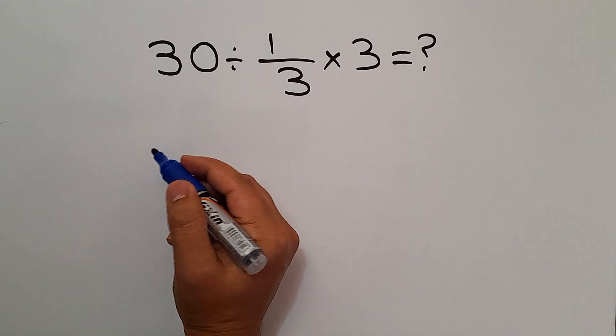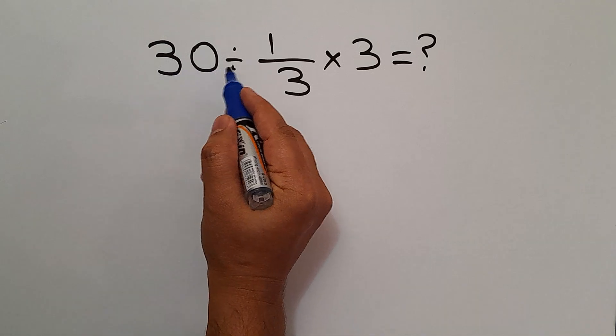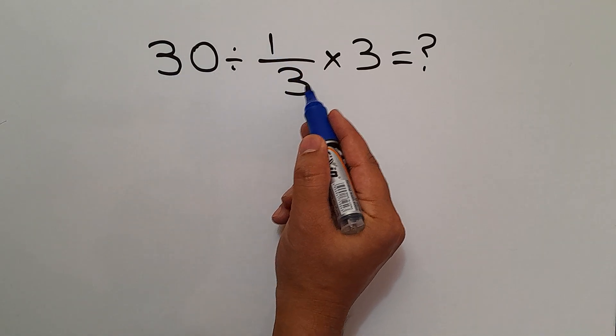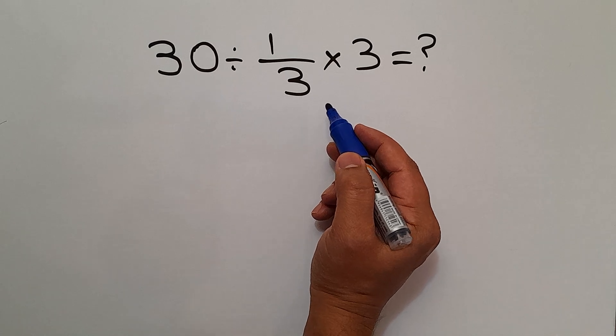Hey guys and welcome to this video. In this video we want to find the value of this expression: 30 divided by 1 over 3 times 3. Are you ready to solve? Let's go ahead and get started.